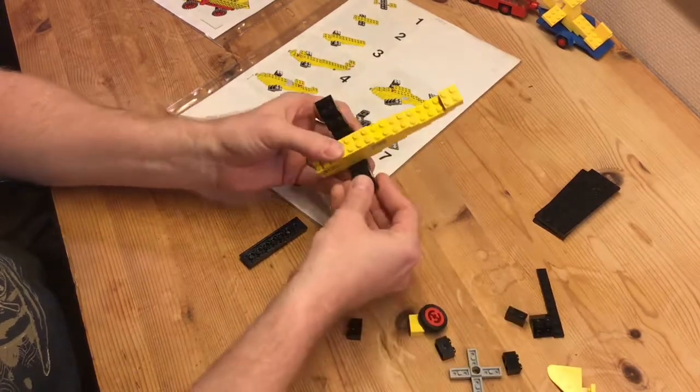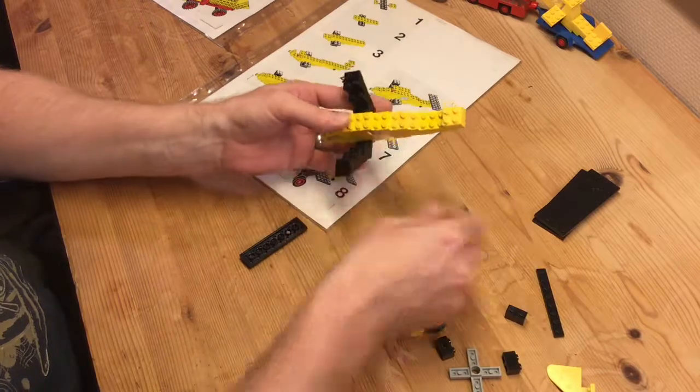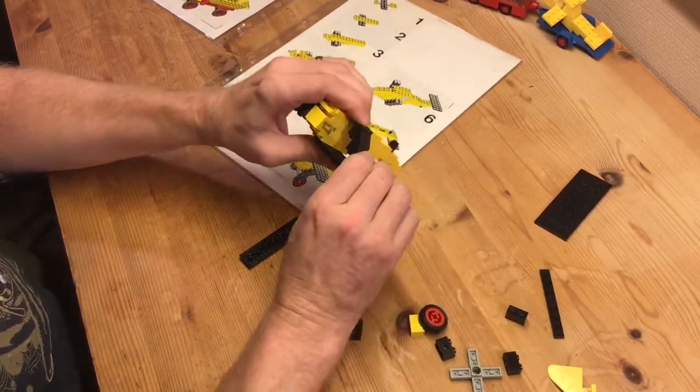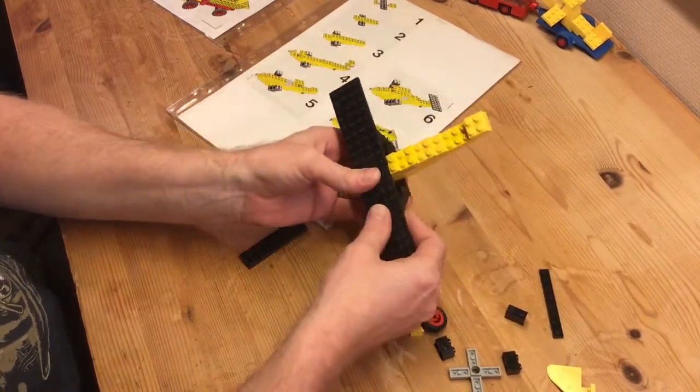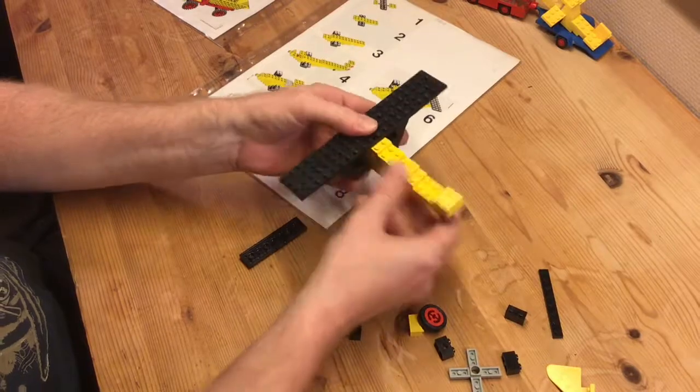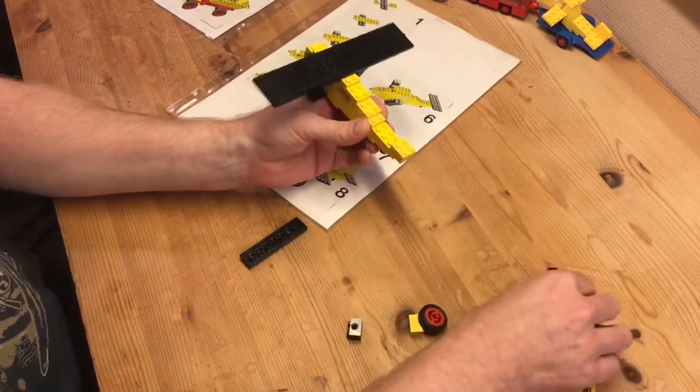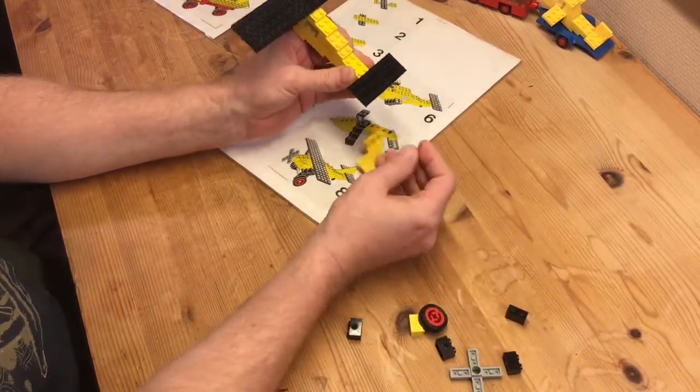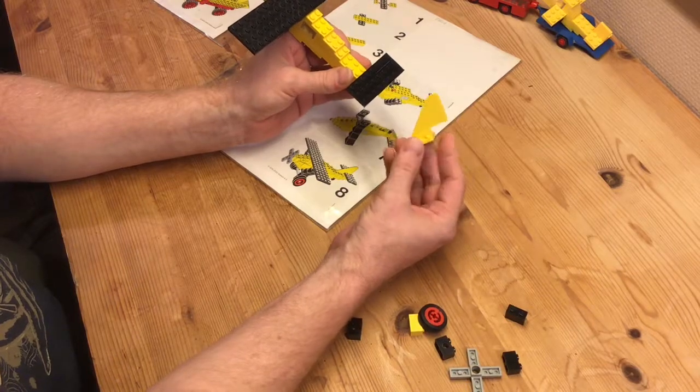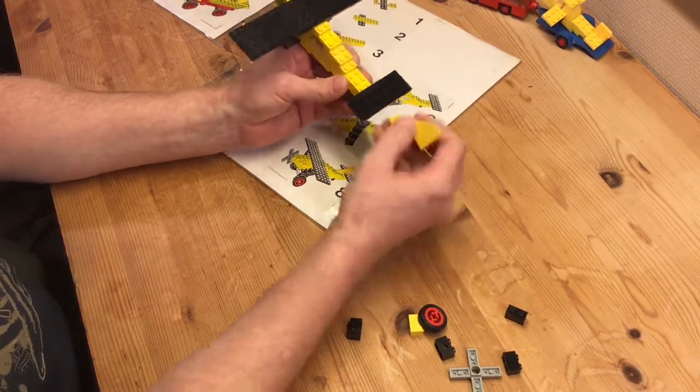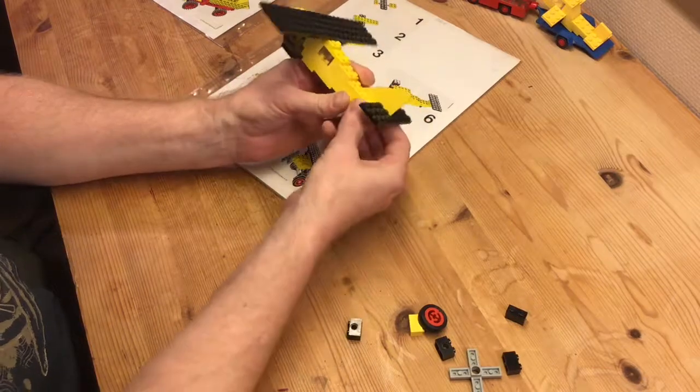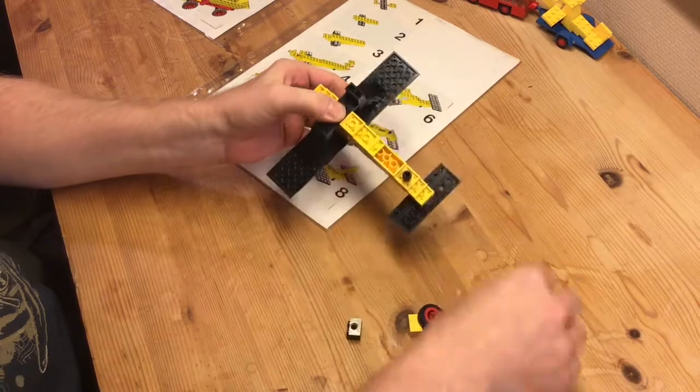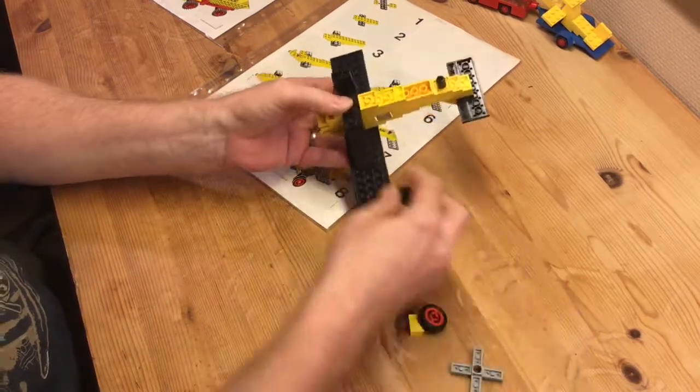Now we got the fuselage. Some more inverted slopes. And putting on the wings. And we just need the tail. Also this piece. I was actually quite surprised that I still had that.